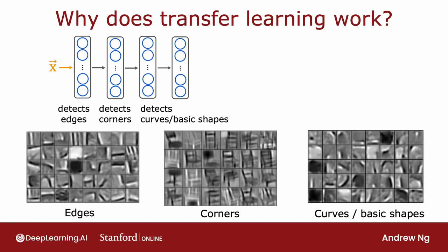And that's why by learning on detecting lots of different images, you're teaching the neural network to detect edges, corners, and basic shapes. And that's why by training a neural network to detect things as diverse as cats and dogs and cars and people, you're helping to learn to detect these pretty generic features of images. And finding edges, corners, curves, basic shapes - this is useful for many other computer vision tasks such as recognizing handwritten digits.